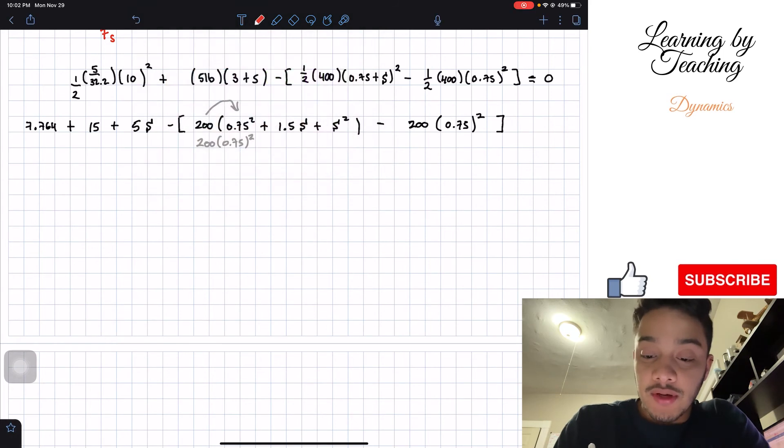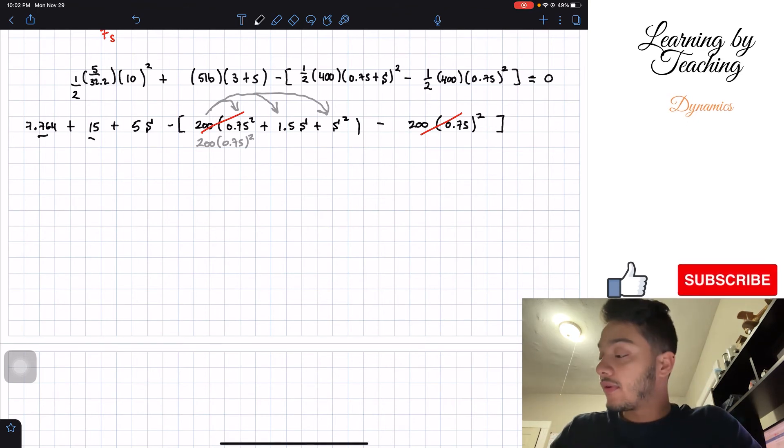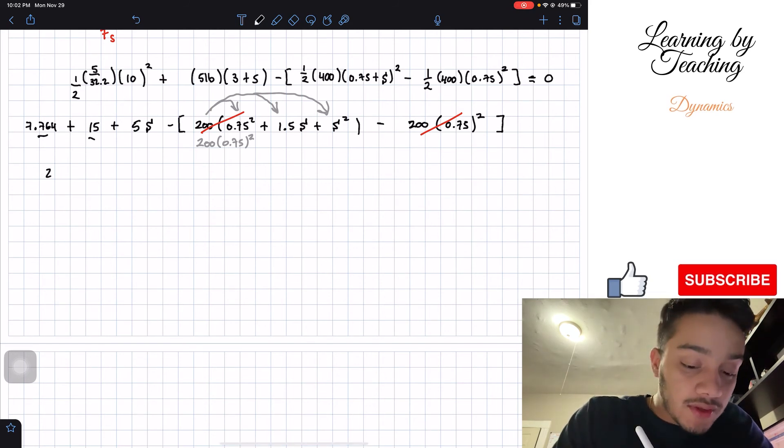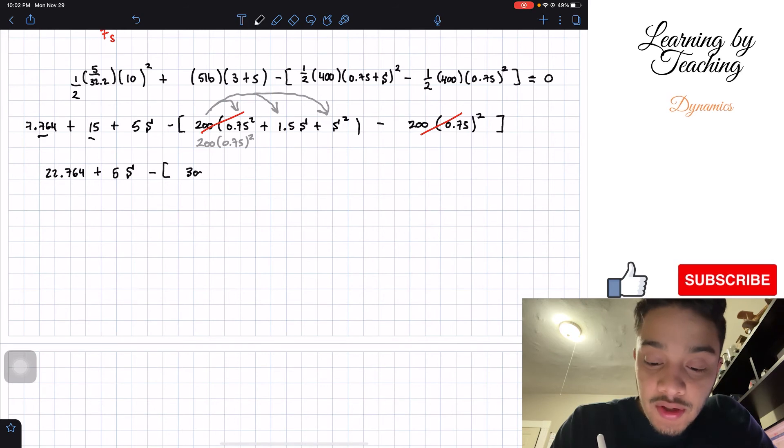Let's cancel it out from here, we're going to cancel this and that. But then let's not forget that we're going to have this 200 also multiplied by 1.5 and also by this. So let's write everything together. Let's add up this one and this one, so we'll have 7.764 plus 15, and that will give me a total of 22.764 plus 5S minus, open the parentheses, and we're going to have 300S minus, I'm sorry, plus 200S squared, and all this should be equal to zero.